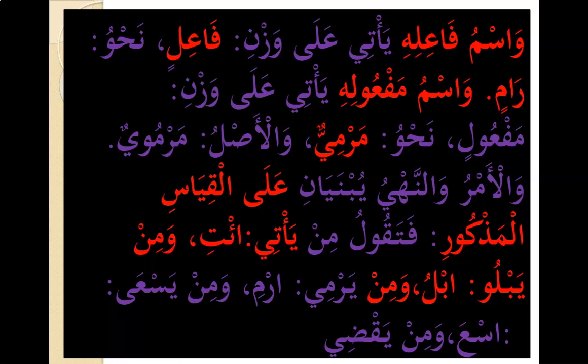The objective form (ism al-maf'ul) of Al-Fi'il Al-Manqus comes on the pattern maf'ulun, just like other verbs — for example, Marmiyun, 'what has been thrown.' The origin of Ramin was Ra'miyun, but the ya has been omitted — this is called al-ilal bil-hadhf, because two letters with sukun cannot meet in Arabic. The tanwin already takes sukun, and the ya also takes sukun; to avoid this, the ya is cancelled.